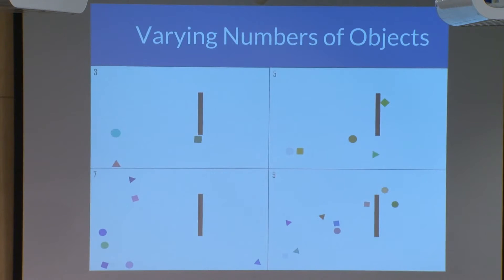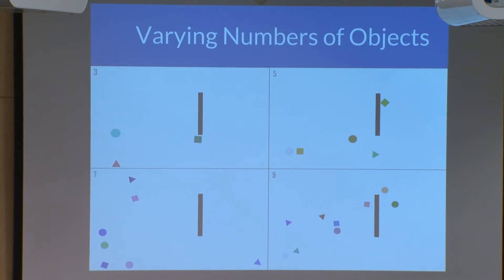Our hypothesis is testing what happens as the number of objects in these animations increases. For example, in videos of three objects, even if you didn't tell the same story as me, it is likely that you were able to recognize the story I was telling about the animation. However, as the number of objects increases to five, seven, or even nine objects, we may no longer be able to do this for a very simple reason: our attention may be guided to different subsets of the objects.